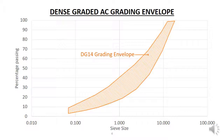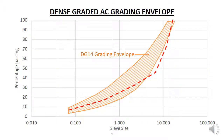For example, this green line is a grading curve of an aggregate mix that would be suitable for use with a DG14 asphaltic concrete — you can see that the curve is entirely within the envelope. While this red line shows the grading curve of an aggregate that would not be suitable: it has too much coarse material, with the section to the right being outside of the envelope.